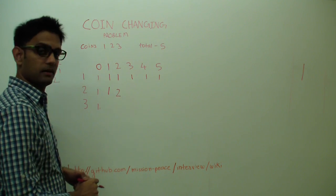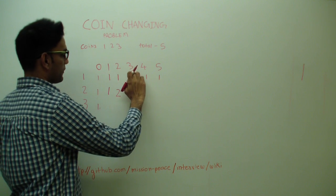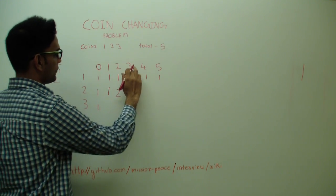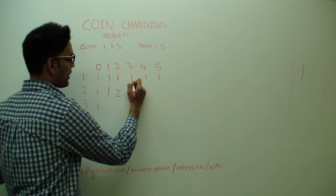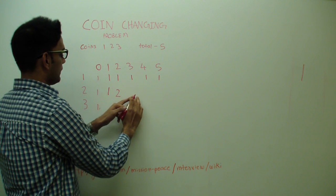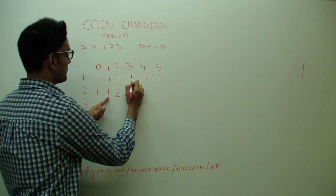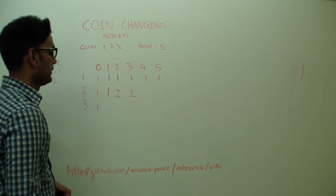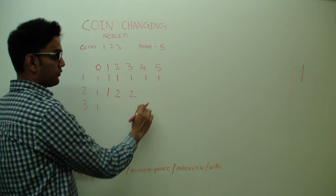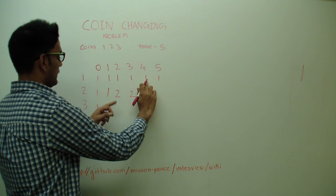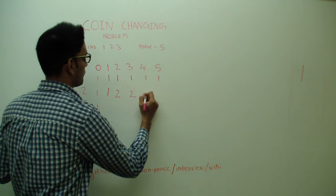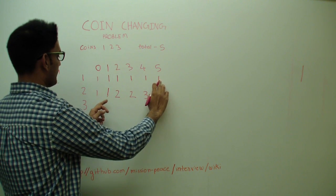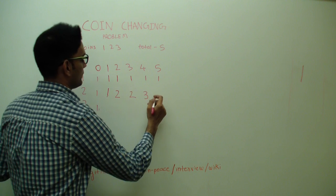For total of 3 with coins 1 and 2: one value comes from the top, and another value comes from going back 2 steps, so addition gives 2 again. For total of 4, the value from the top plus the value 2 steps back gives 3. For total of 5, the value from the top plus the value 2 steps back gives 4 — wait, 3.